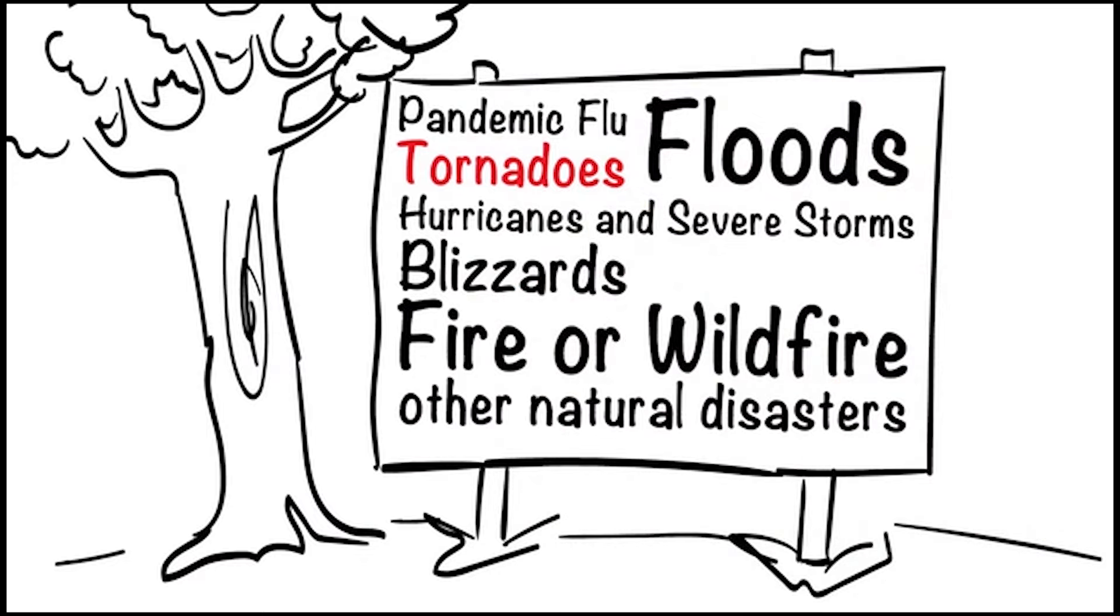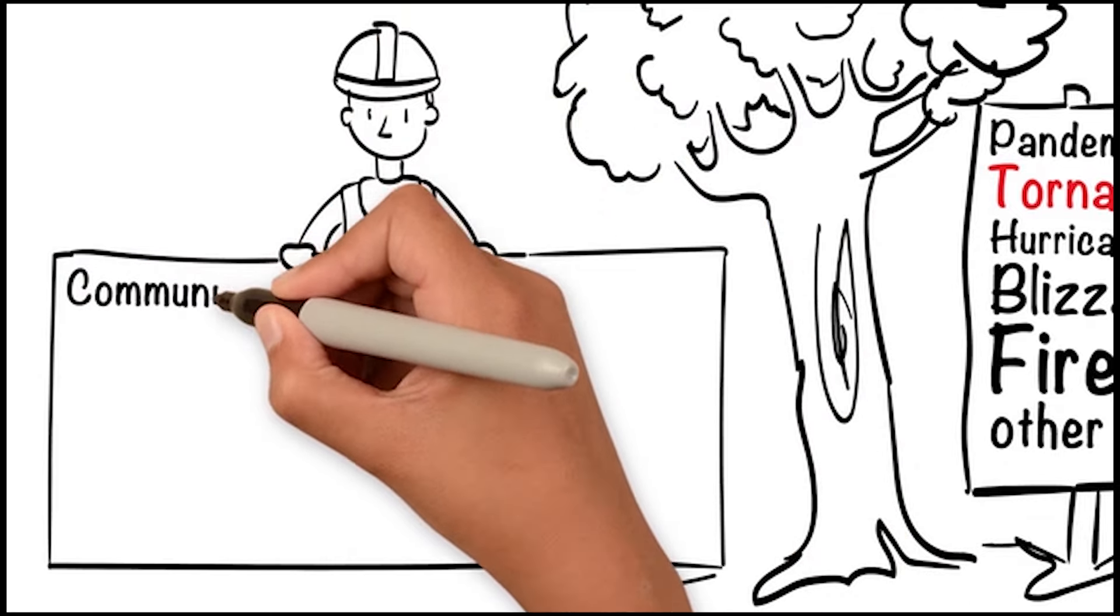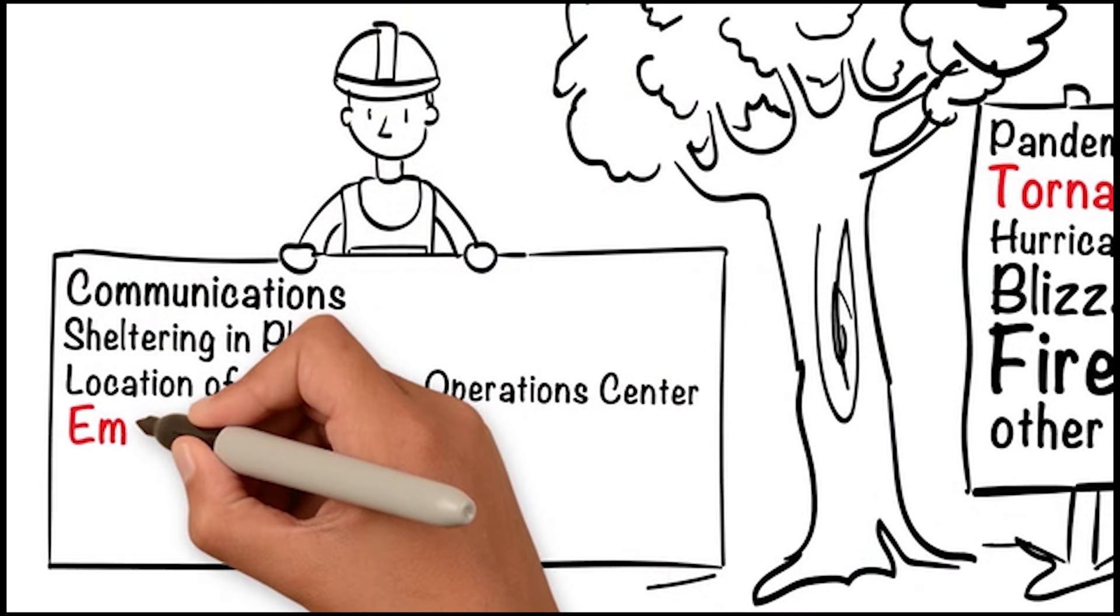Consider other common natural disasters in your area. In addition to specific responses to these emergencies, a plan should also consider communications, sheltering in place, and location of emergency operations center.